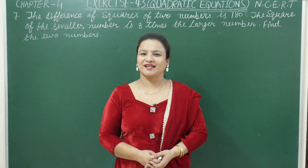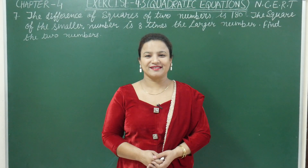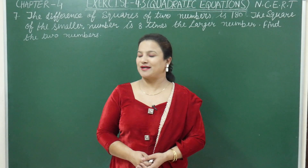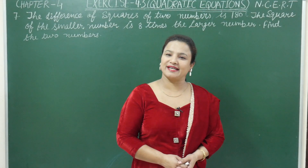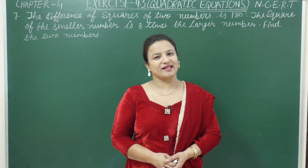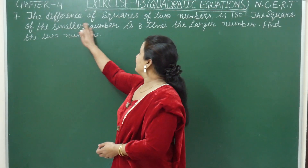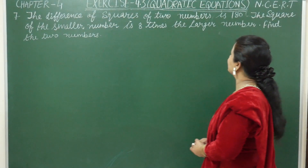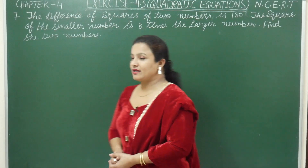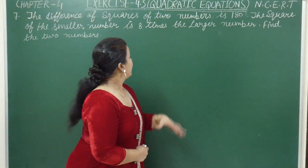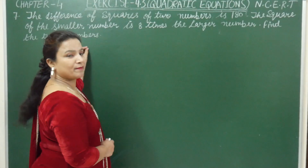Hello everyone, how are you? I think you will be alright. Let's start question number 7 of exercise 4.3, chapter 4, quadratic equations. The question is: the difference of the squares of two numbers is 180. The square of the smaller number is 8 times the larger number. Find the two numbers.